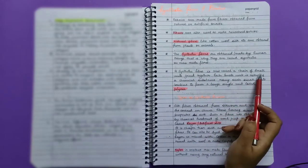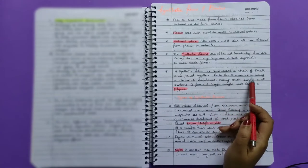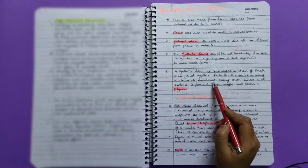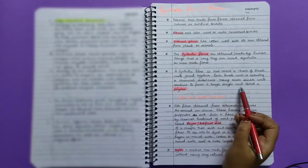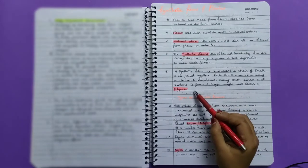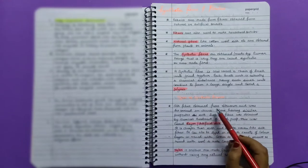A synthetic fiber is also called a chain of small units joined together. Each small unit is actually a chemical substance. Many such small units combine to form a large single unit called a polymer.